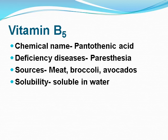Vitamin B5: its chemical name is pantothenic acid. Deficiency disease: paresthesia. Sources include meat, broccoli, and avocados. Solubility: it is soluble in water.